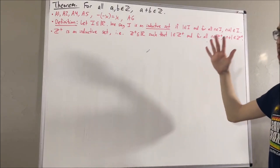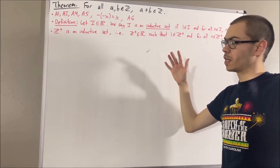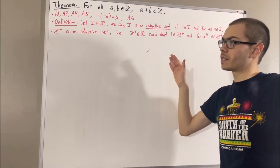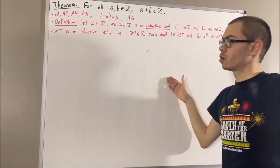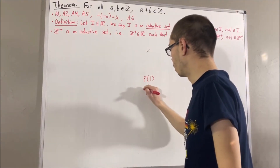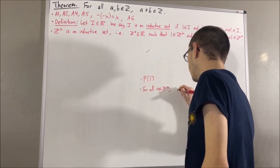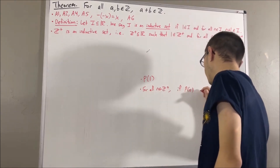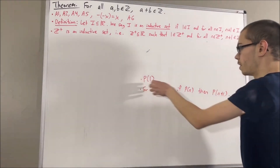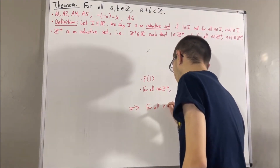We've also proven that the principle of mathematical induction holds for the positive integers, which essentially tells us: if we're trying to prove a statement p regarding positive integers, to prove that p holds for all positive integers, we just have to prove p holds for 1, and we have to prove that for all positive integers n, if p holds for n, then p holds for n plus 1. If we can prove these two things, then that implies for all positive integers n, p holds.